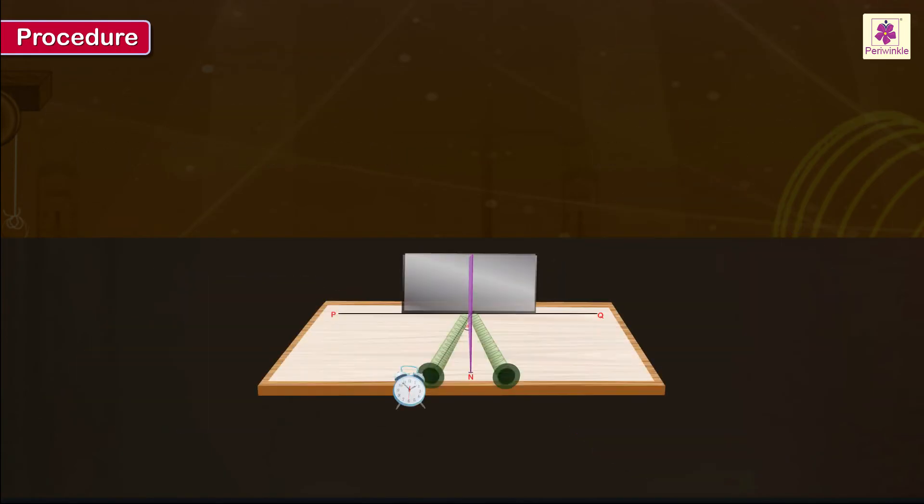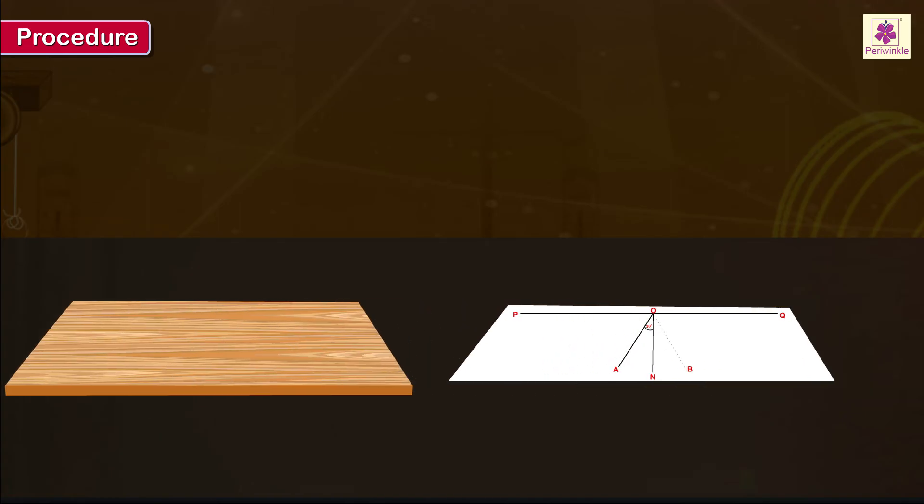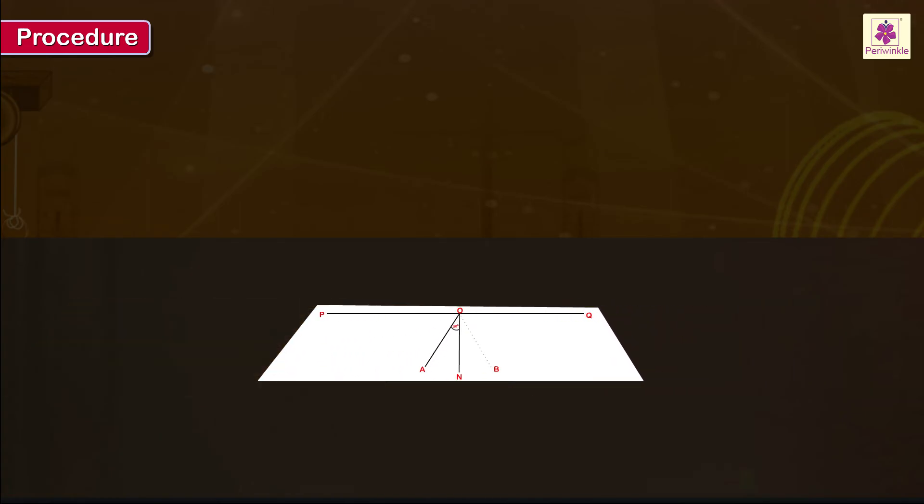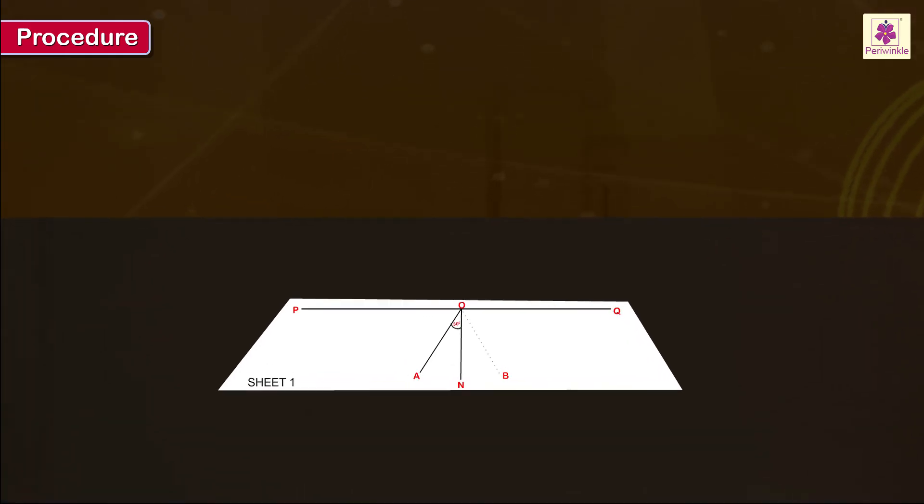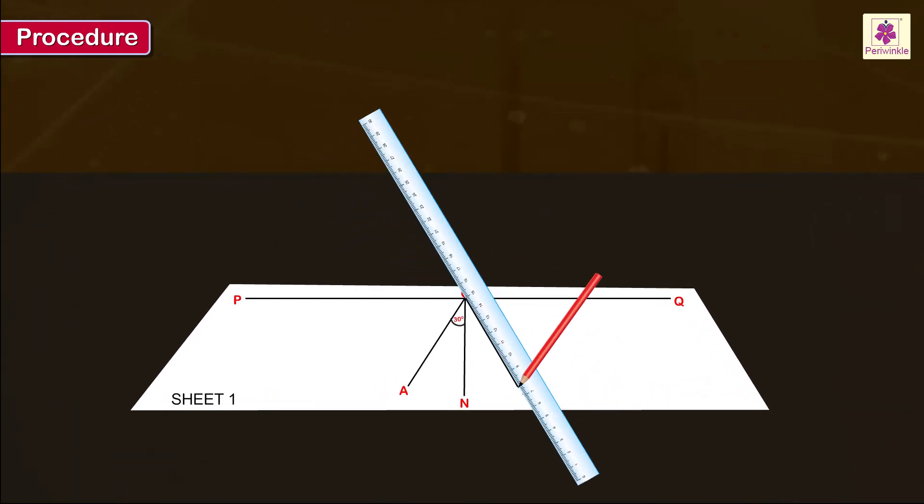Procedure: Remove the clock, metal sheet, sound absorbing screen, the two pipes and the drawing sheet. Number the drawing paper as sheet 1. Draw ray OB and measure angle BON.